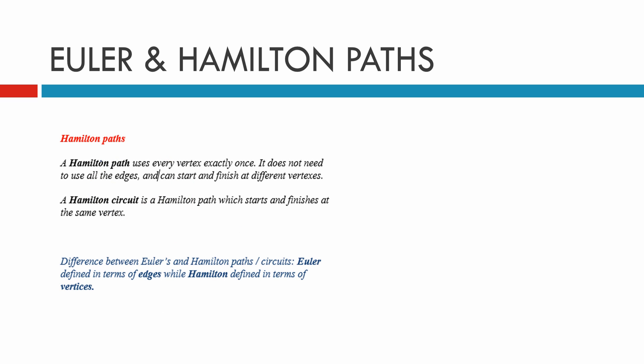Hamilton paths are different. They deal with the vertices. You can only go through every vertex once, exactly once. Euler is about edges, Hamilton is about vertices. It does not need to use all the edges - if there are more edges than you need, that's fine. And it can start and finish at different vertices.